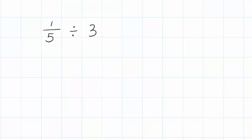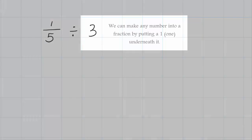We've talked about dividing fractions and dividing mixed numbers. Now I'm going to show you how to take a fraction and divide it by just a regular whole number. In this case, I'm taking one-fifth and dividing it by three. The first thing I need to do is make three into a fraction, and the way you can take any number and make it a fraction is by putting one underneath it.